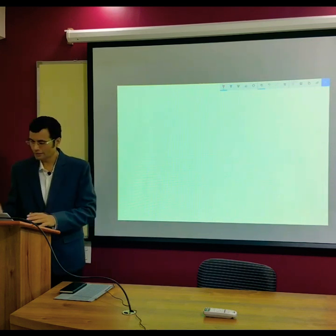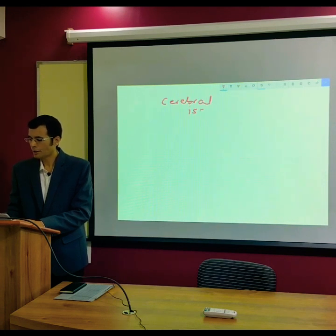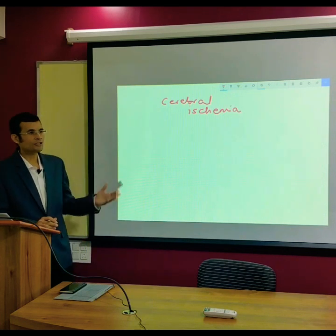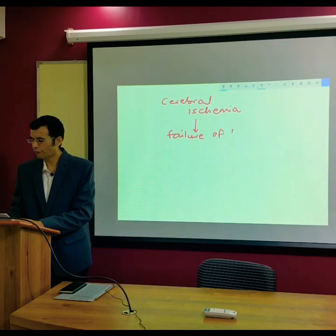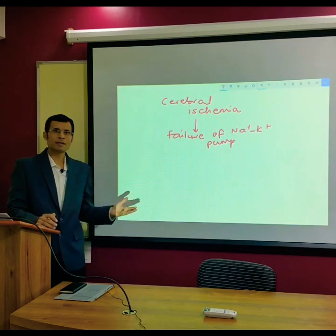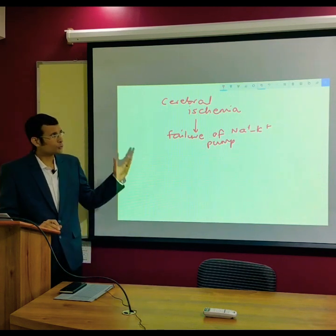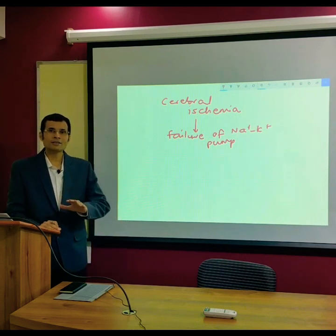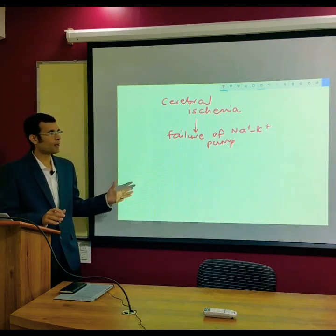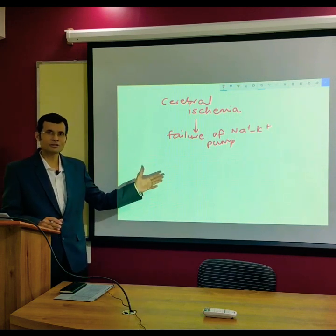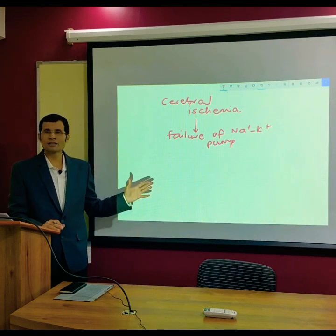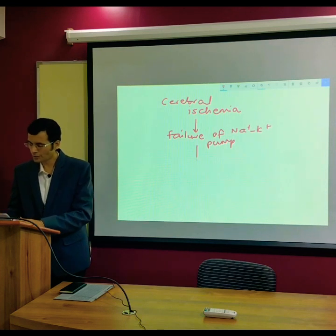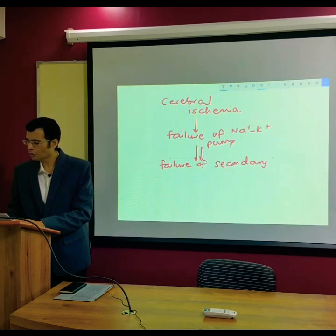The pathophysiology is as follows: in cerebral ischemia — or any ischemia or hypoxia — the first thing to be affected is the sodium-potassium pump. There would be a failure of the sodium-potassium pump in the neuronal membranes. Since the sodium-potassium pump establishes the sodium concentration gradient, its failure means all secondary active transports in that region will also fail.